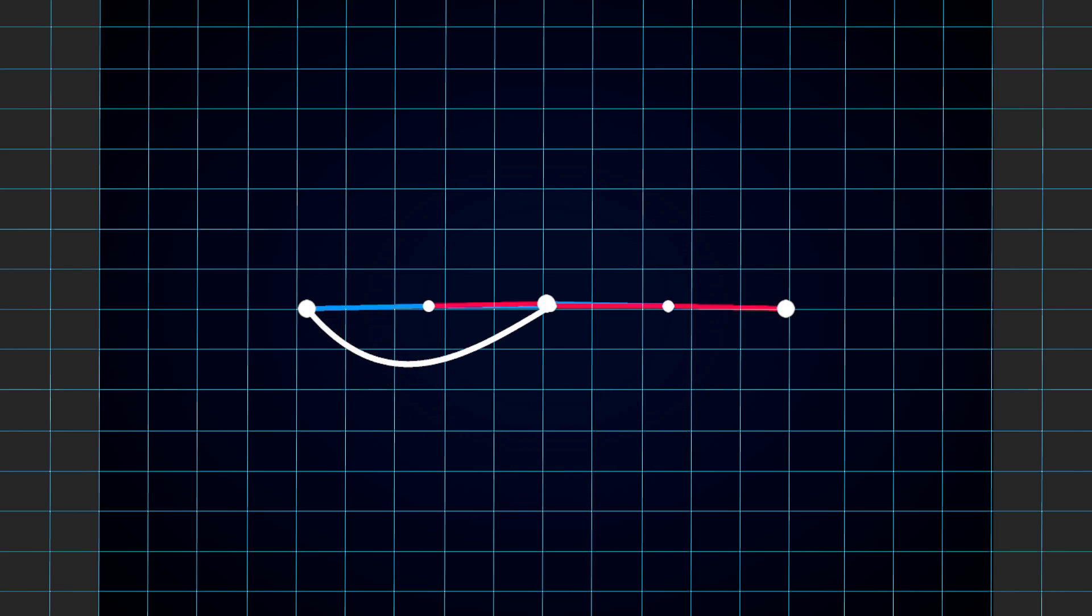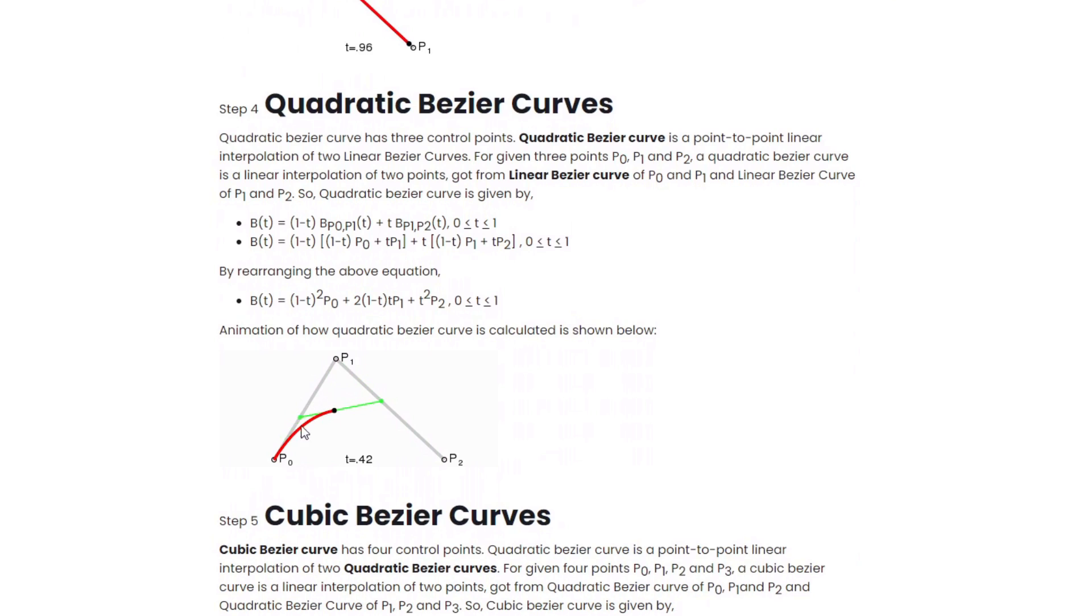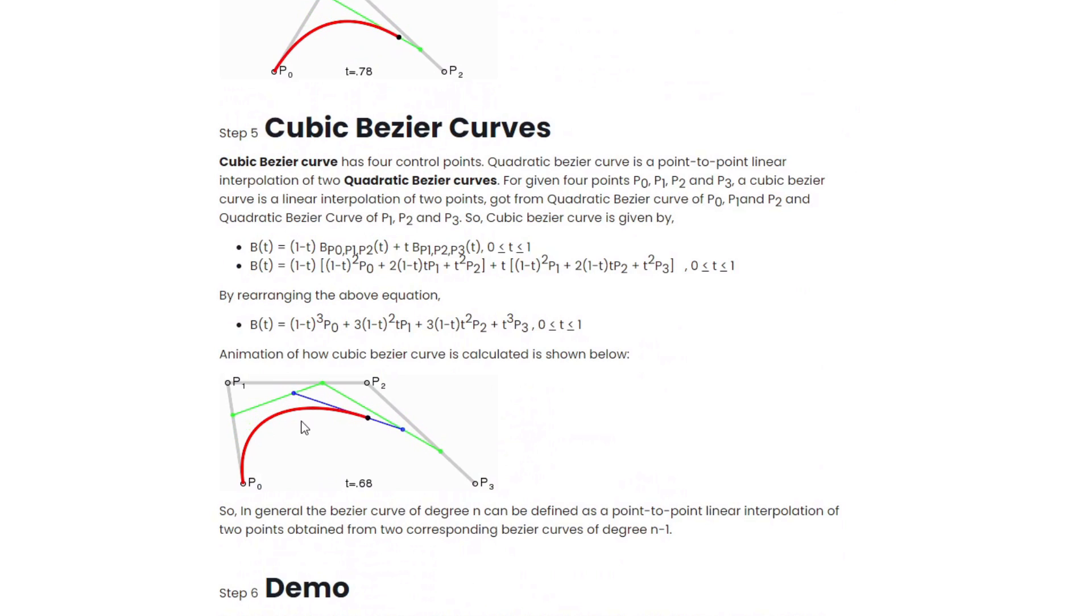This is already enough to achieve some very interesting shapes, but I want to take it a bit further before we start playing around. What we've created so far is called a quadratic Bezier curve. It's a Bezier curve with three control points: the beginning of the line, the end of the line, and the middle point which controls the shape of the curve.